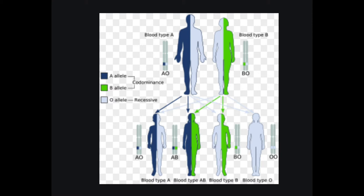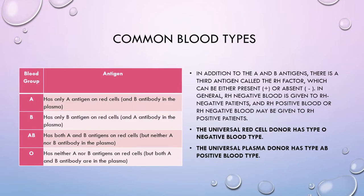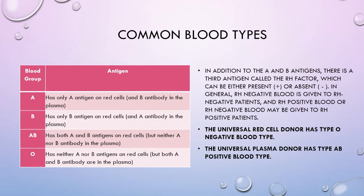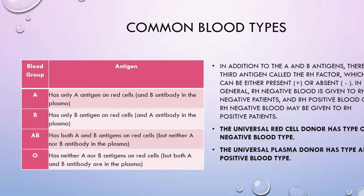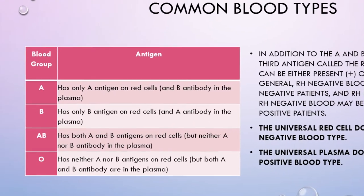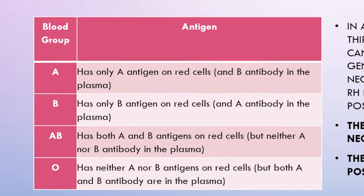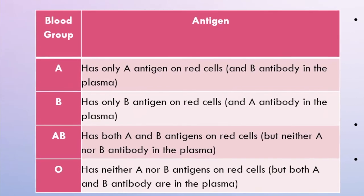There are four major blood groups determined by the presence or absence of two antigens, A and B, on the surface of red blood cells. In addition to A and B antigens, there is a third antigen called the Rh factor, which can be either present (positive) or absent (negative) in general.